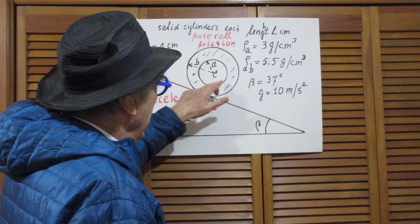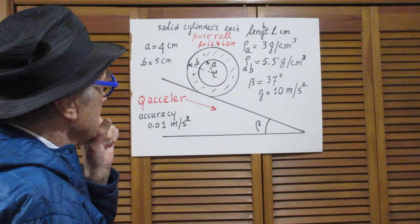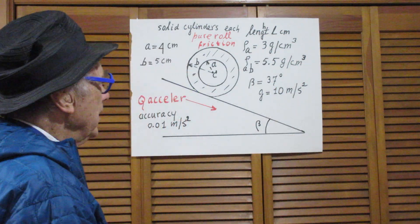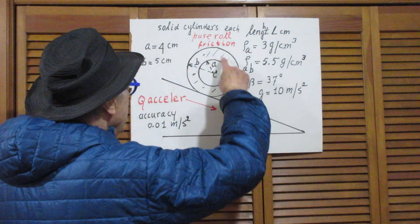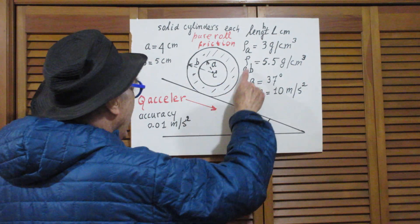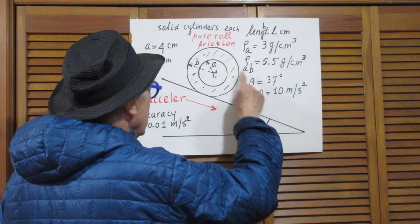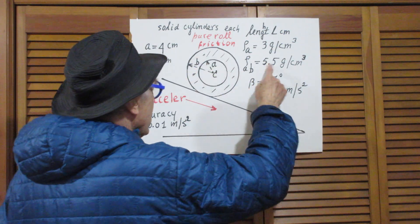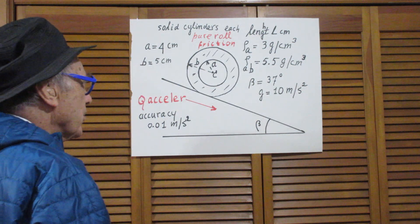The density of the inner cylinder is three grams per cubic centimeter. And the density of the ring-like cylinder, that's why I say ρ_ab in this area here which I hatched, is 5.5 grams per cubic centimeter.